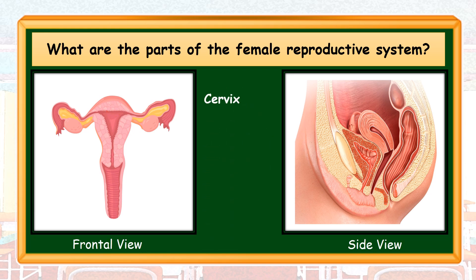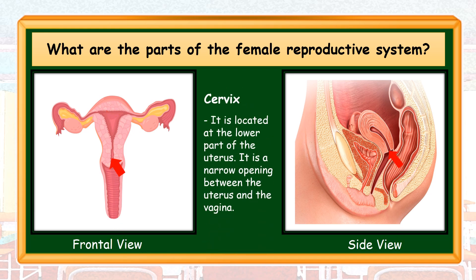Cervix. It is located at the lower part of the uterus and the vagina. It also expands to allow the baby to pass through during childbirth.